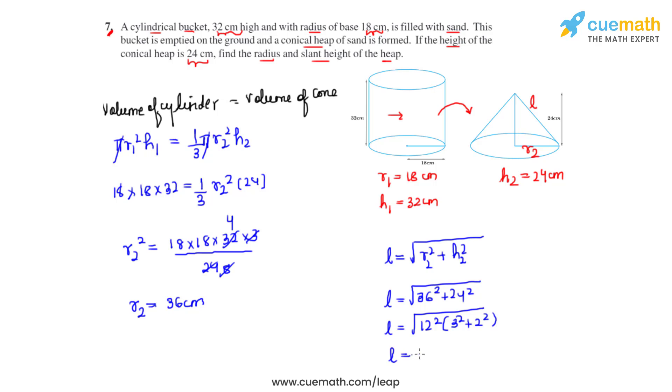So we get it as L to be equal to 12 times under root 13 centimeters as the slant height of the conical heap.